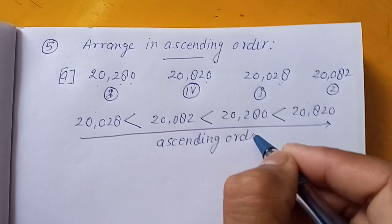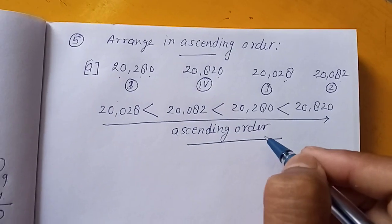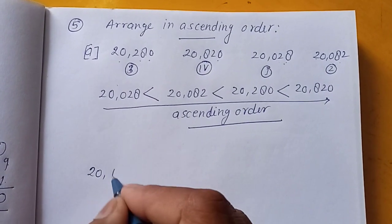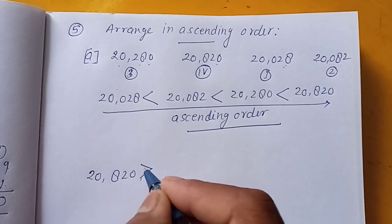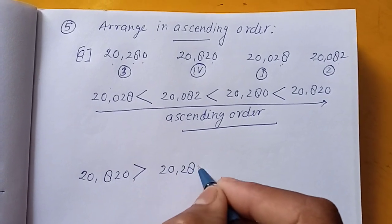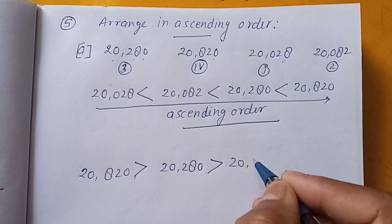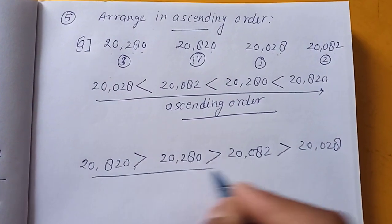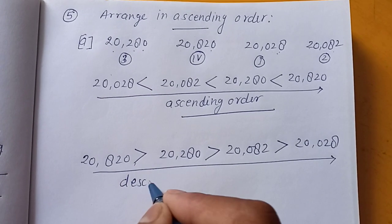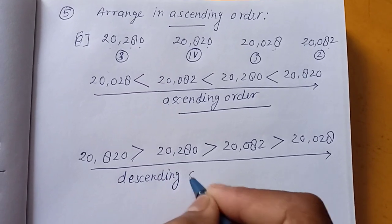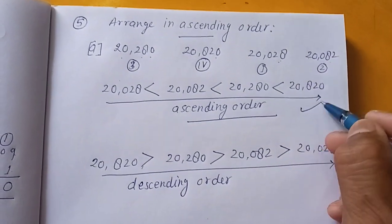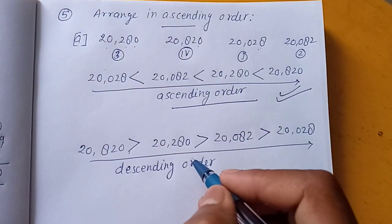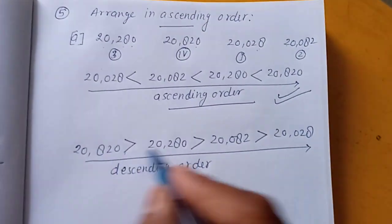This order is called ascending order. The opposite of this is descending order — we write the greatest number first. So: 20,820 first, then 20,280, then 20,082, and finally 20,028. This order is called descending order. So ascending order means smallest to greatest, and descending order means greatest to smallest.